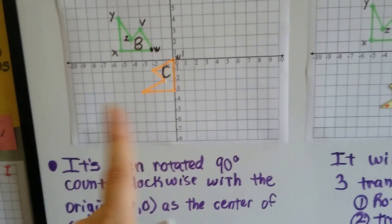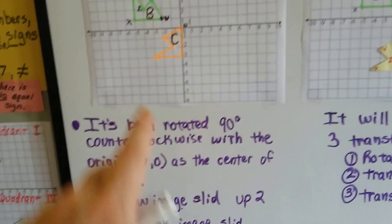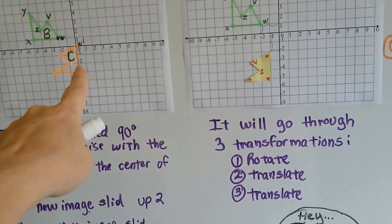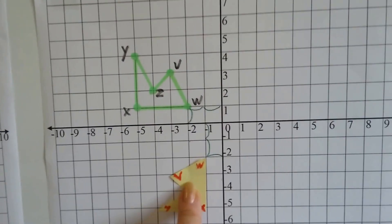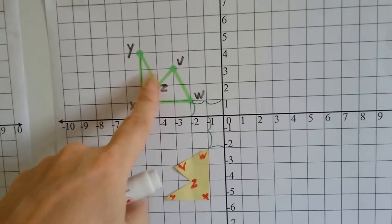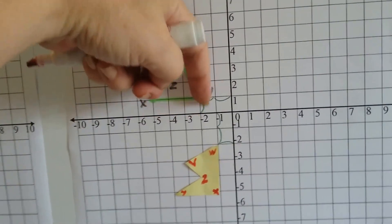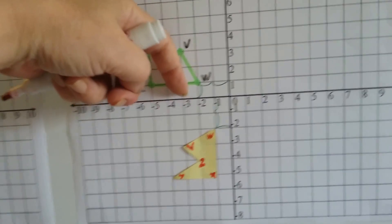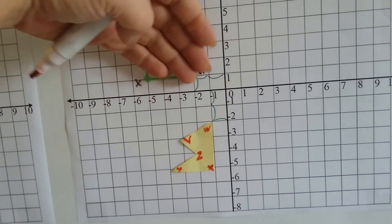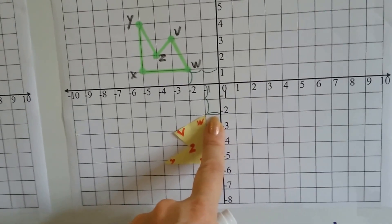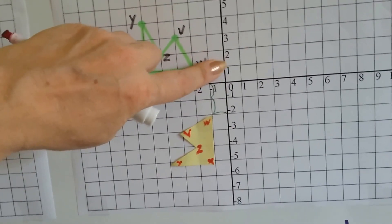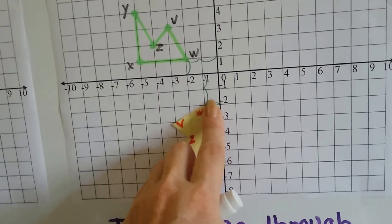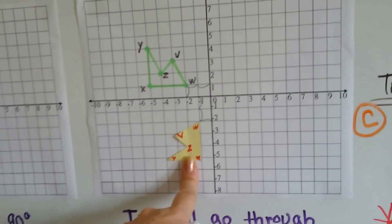Now keep an open mind. What happened after that was the new image that rotated — it was right here — and it slid up and then over one to become C. The pre-image is one unit away from the x-axis. See how line WX is just one unit away from the x-axis? When it rotated 90 degrees, it's going to be one unit away from the y-axis. Point W was two units away from the y-axis, so after it rotates 90 degrees, it's going to be two units away from the x-axis right here.